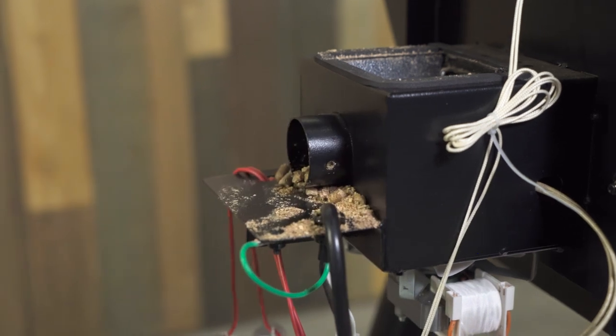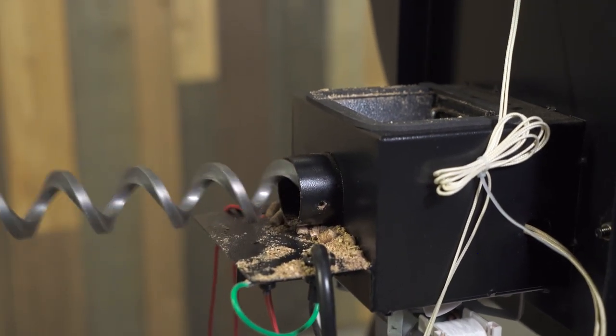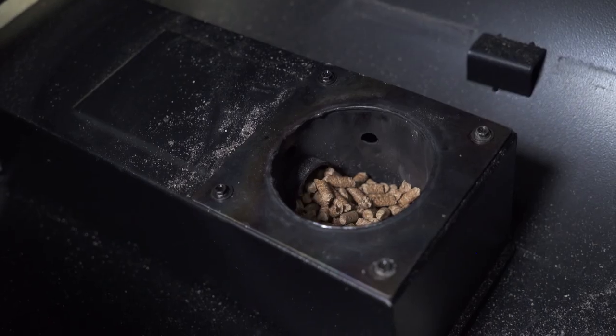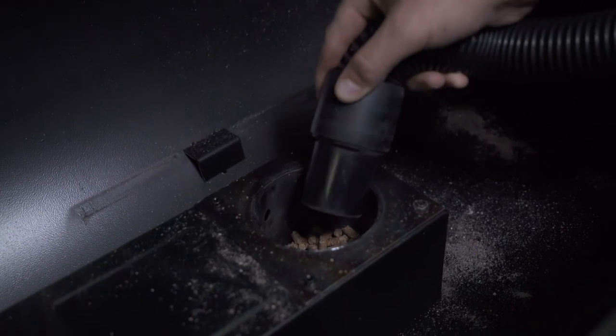After removing the auger, push all the loose pellets out of the auger tube and into the fire pot. Use a shop vac to help remove all the pellets from your grill.